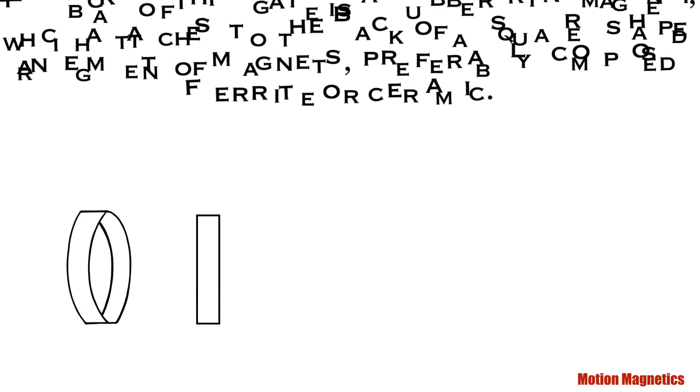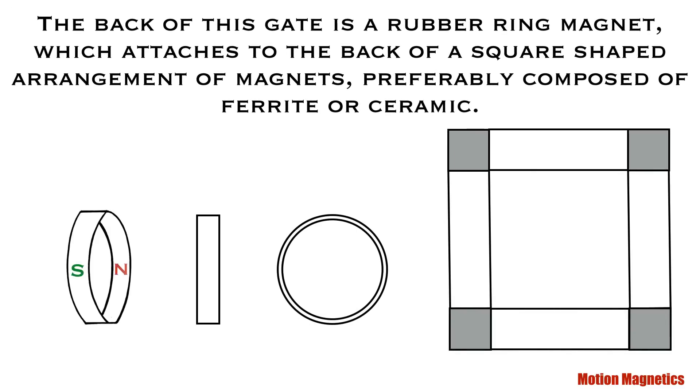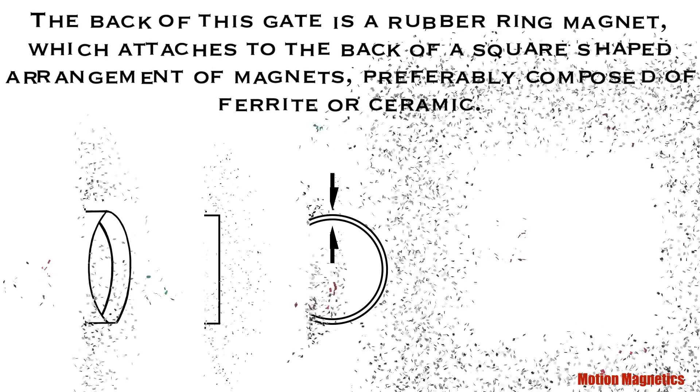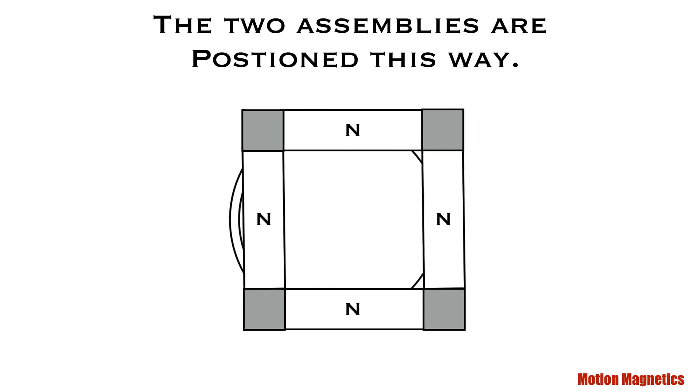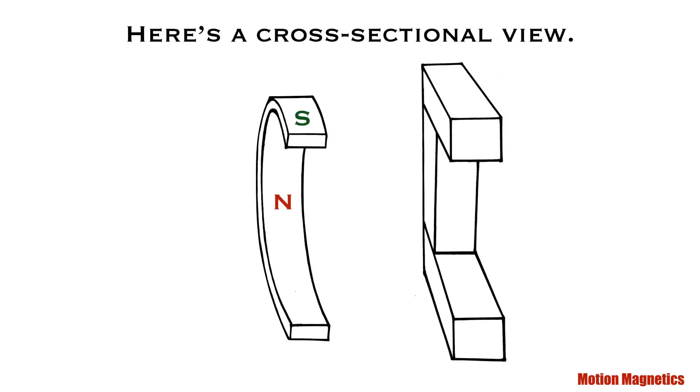In Johnson's original design, the back of this gate is a rubber ring magnet which attaches to the back of the square-shaped arrangement of magnets, preferably composed of ferrite or ceramic. For this demonstration, I used ceramic block magnets for both portions of the gate. The two assemblies are positioned this way. Here's a cross-sectional view.